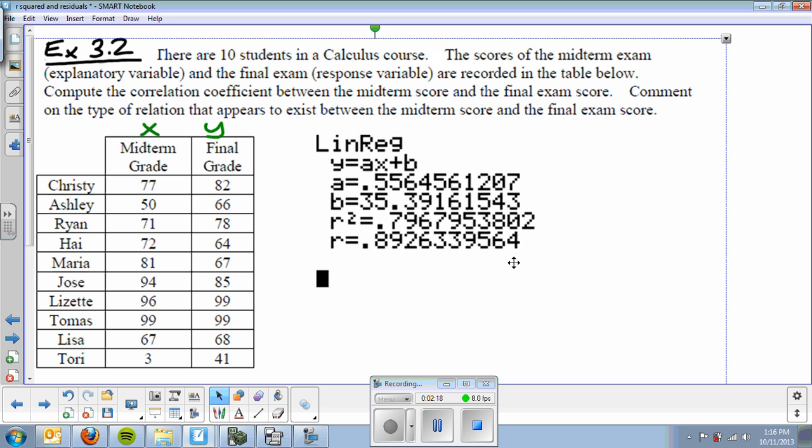Now I'm just going to copy these down so I can use those. We talked about a being the slope, 0.5565. We talked about b being the y-intercept. We did not talk about r squared, which we talked about today, and r being the correlation, 0.8926, which tells me this is a strong or very strong positive correlation. We can also look at the scatter plot.